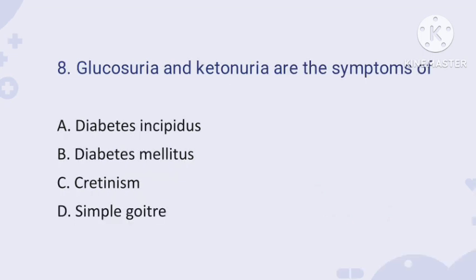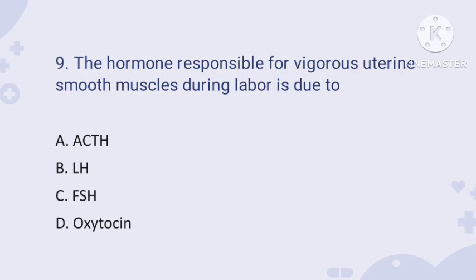Question number eight: glycosuria and ketoneuria are the symptoms of which condition? Glycosuria is the presence of glucose in the urine, and ketoneuria is the presence of ketone bodies in the urine. These are major symptoms of diabetes mellitus, so option B is the right answer.